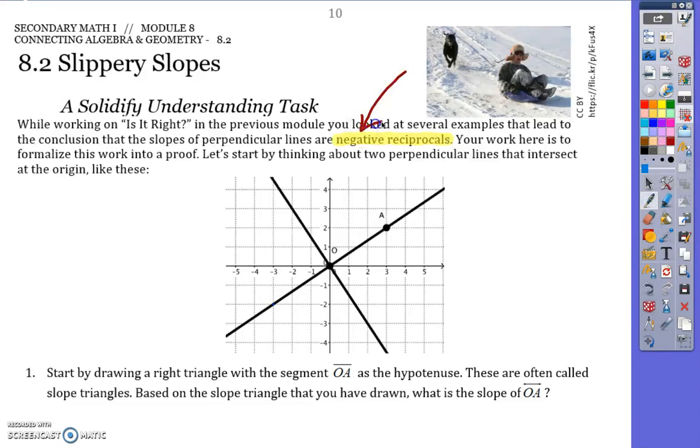Negative means different sides, and reciprocal means flipped over. Our goal now is to make this more formal and figure out why it's true and how it works. Start by drawing a right triangle with segment OA as the hypotenuse.